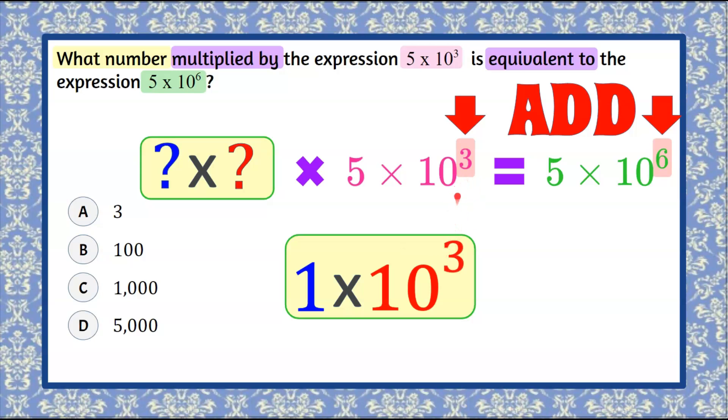So 10 cubed times 10 cubed, when we're multiplying, we're going to add those 3's and 3 plus 3 is 6. So now we know that this missing value in scientific notation would be 1 times 10 cubed.